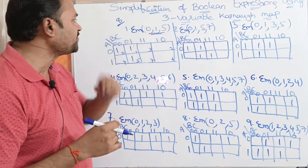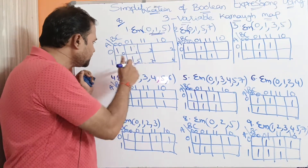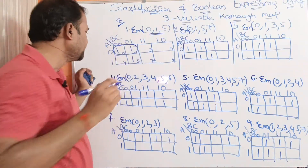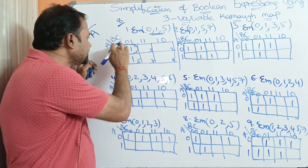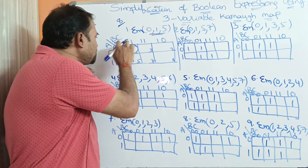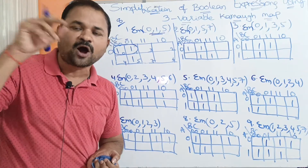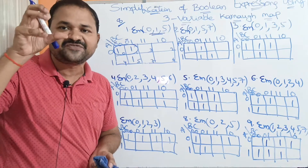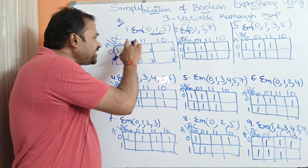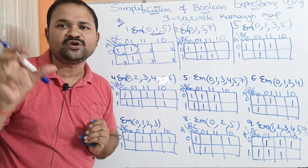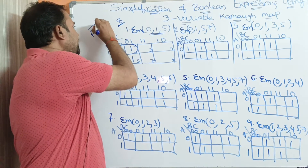Let us solve the first problem: ΣM(0, 1, 5). We place 1s in minterms 0, 1, and 5. We can form minterms 0 and 1 as an adjacent pair. The A value is 0, so we write A-bar. Observing these two cells, the second variable (C) changes from 0 to 1, so we neglect it. The common variable B is 0, giving B-bar. So the first pair gives A-bar B-bar.